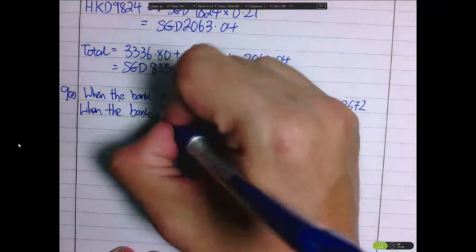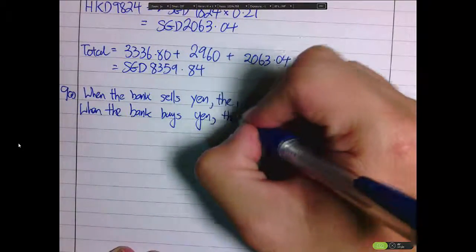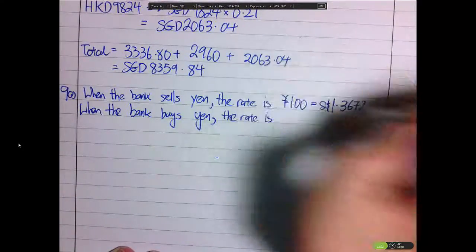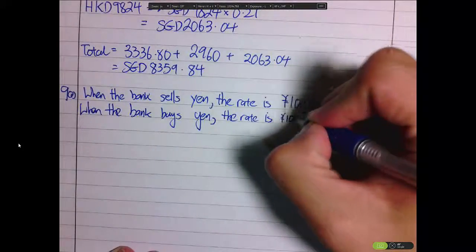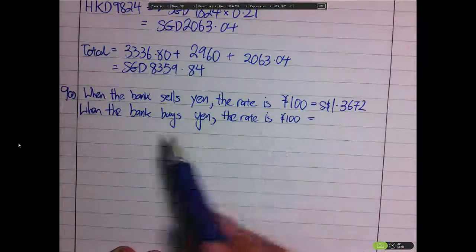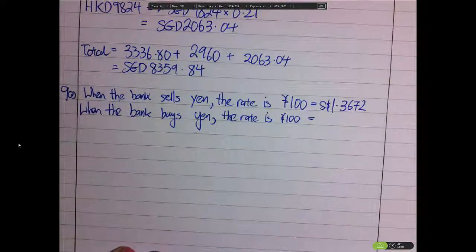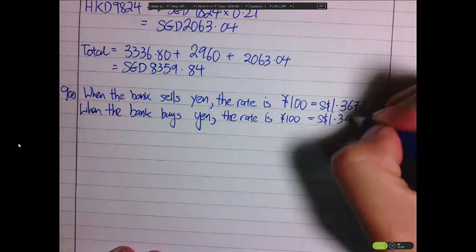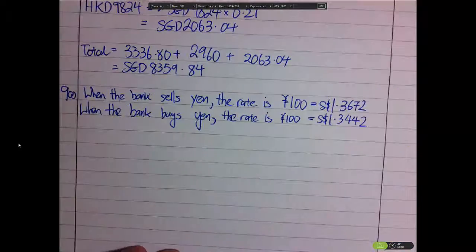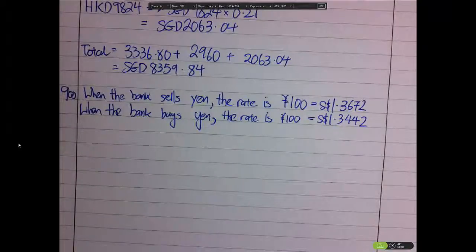When the bank buys Yen, the rate is for 100 yen. So that means when they buy Yen, they take in 100 yen and they will give you $1.3442.